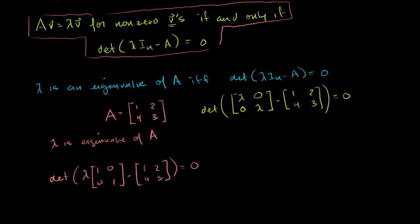And then this matrix, or this difference of matrices, this is just so we'll keep the determinant. This is the determinant of this first term is going to be lambda minus 1. The second term is 0 minus 2, so it's just minus 2. The third term is 0 minus 4, so it's just minus 4. And then the fourth term is lambda minus 3, just like that.